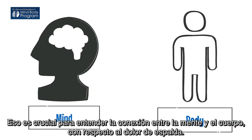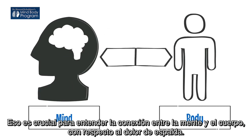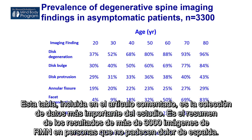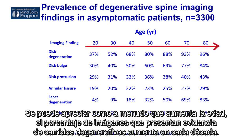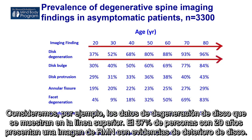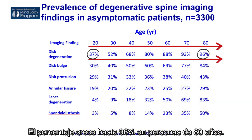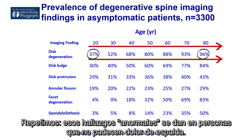This is also key to understanding the mind-body connection when it comes to back pain. This chart from the article is the most important piece of data in the study. It summarizes the results of over 3,000 MRI scans of the spine in people who have no back pain. As age increases, the percentage of scans showing degenerative changes increases every decade. Take disc degeneration: 37% of 20-year-olds have MRI evidence of disc degeneration, increasing to 96% of 80-year-olds. Again, these supposedly abnormal findings are seen in people with no back pain.